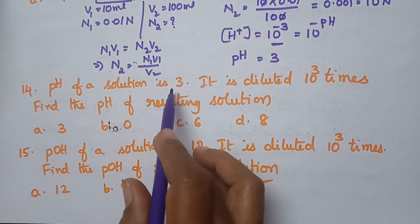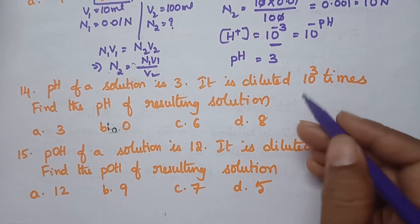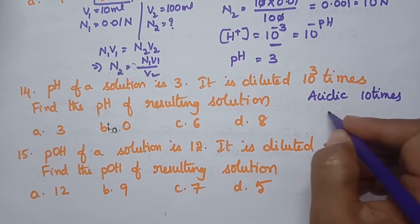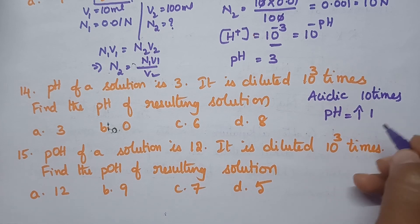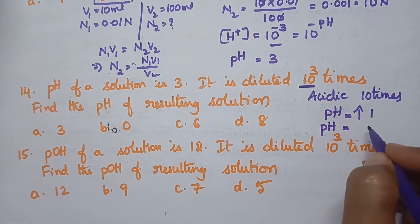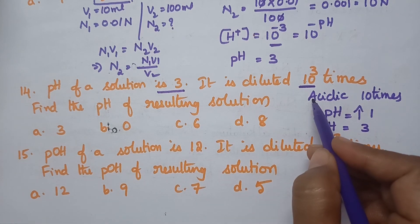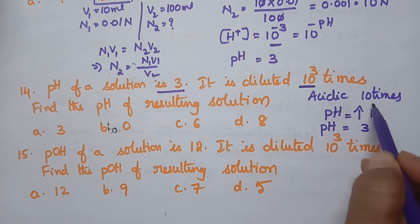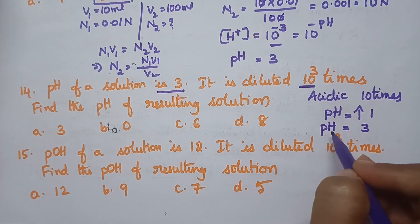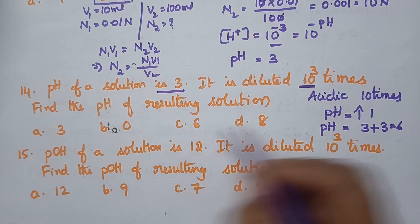The pH of a solution is 3 and it is diluted 10³ times. For an acidic solution, diluting by 10 times increases the pH by 1. So diluting by 10³ times increases the pH by 3. The original pH is 3, so the final pH = 3 + 3 = 6. The pH of the resulting solution is 6.